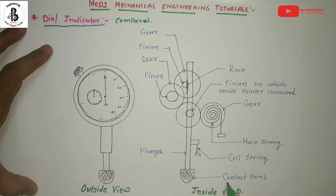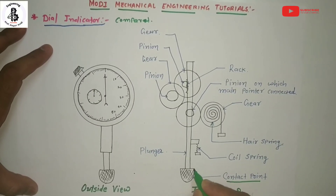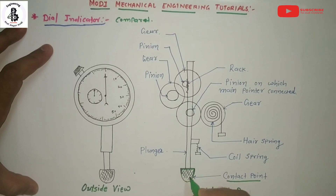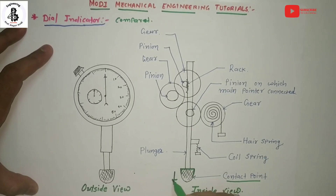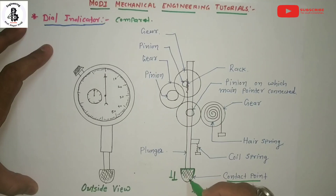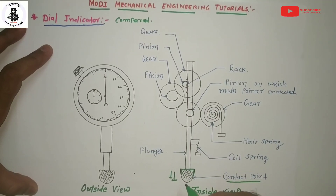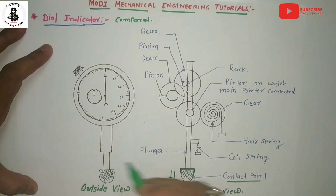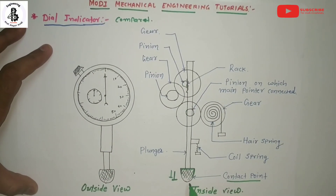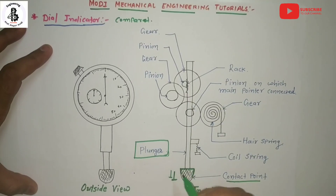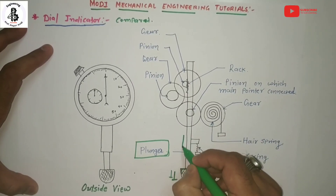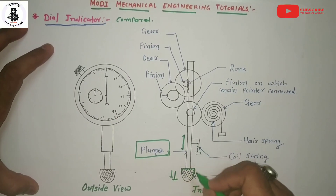Starting with the contact point — this is the part that is physically in contact with the measured surface or measured job. The movement of this contact point corresponds to a change in dimensions. Suppose an initial position changes to a second position; that change is reflected on the indicator. The contact point is connected with the plunger, and by the changing of dimensions that plunger moves up and down, making a vertical reciprocating motion.